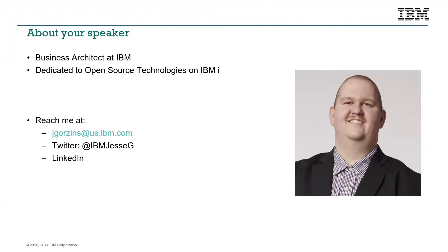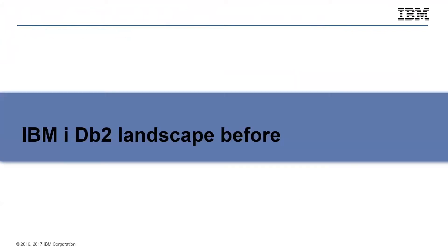The topic today is the new ODBC connector that we have available for IBM i and why that's important. To start that conversation I'm going to revisit what the IBM i DB2 landscape looked like before. I'm focusing on PHP today, but this is actually a similar story across various languages on IBM i — a similar story and similar timeline when it comes to Ruby, Node.js, JavaScript, Python, or even R.